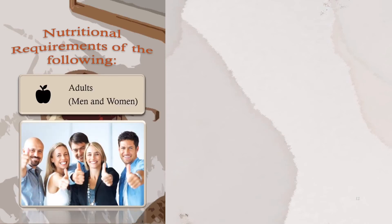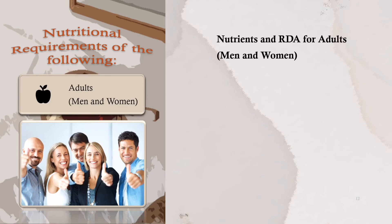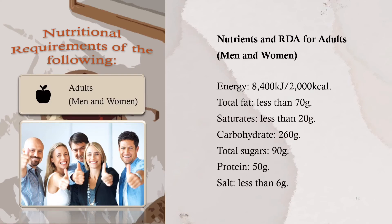Adults, men, and women: Nutrients and RDA for adults — Energy: 8,400 kJ or 2,000 kcal; Total fat: less than 70 grams; Saturates: less than 20 grams; Carbohydrate: 260 grams; Total sugars: 90 grams; Protein: 50 grams; Salt: less than 6 grams.